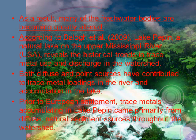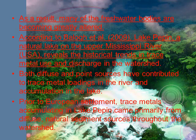According to Balogh et al. (2009), Lake Pepin, a natural lake on the upper Mississippi River, USA, reveals the historical trends in trace metal use and discharge in the watershed. Both diffuse and point sources have contributed to trace metal loadings in the river and accumulation in the lake.